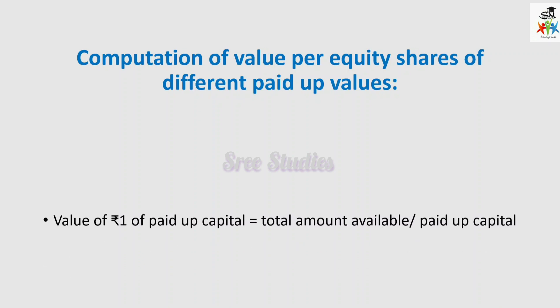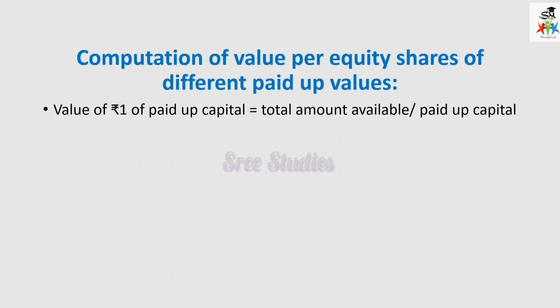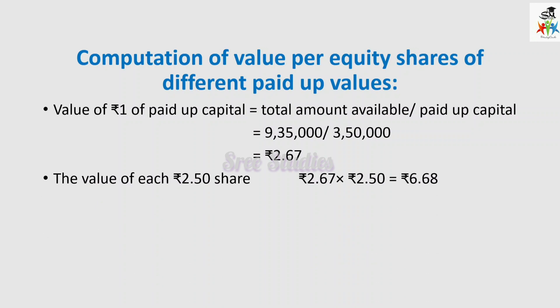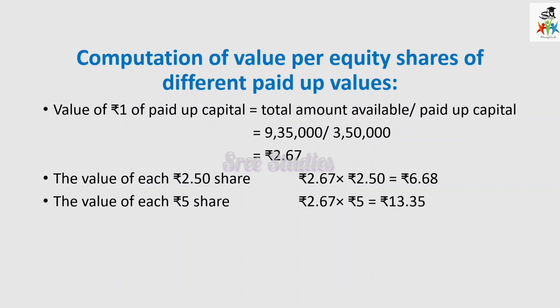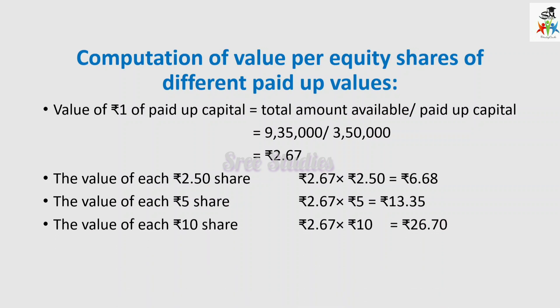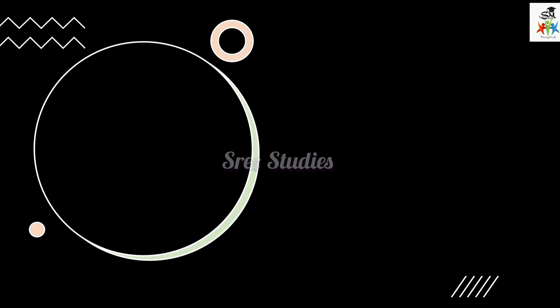We now calculate per equity share value for different paid up values. First, we find the value of rupee 1 paid up: total amount 9,35,000 divided by total paid up capital for all shares of different denominations, which is 3,50,000, giving rupees 2.67 per rupee of paid up capital. For the share with rupees 2.50 paid up, for shares with rupees 5 paid up, and for shares with rupees 10 fully paid up, we substitute and multiply accordingly. Hope you understood. Bye from Srimati, thank you.